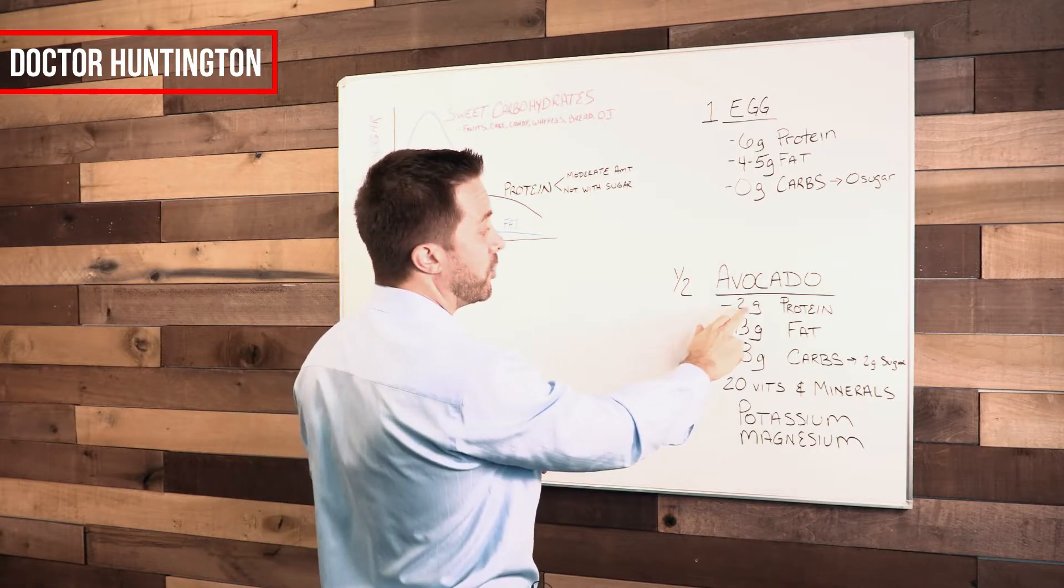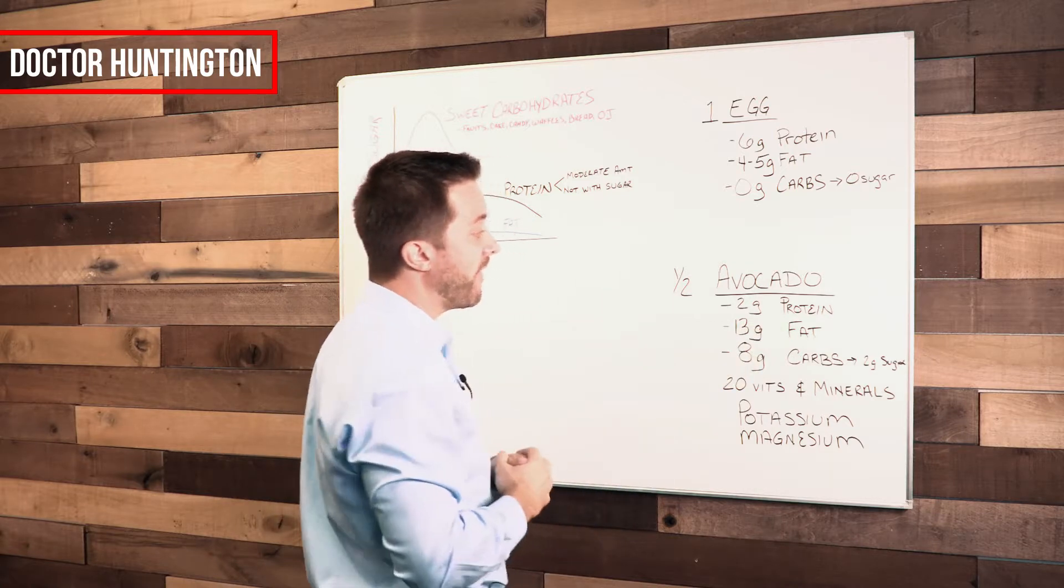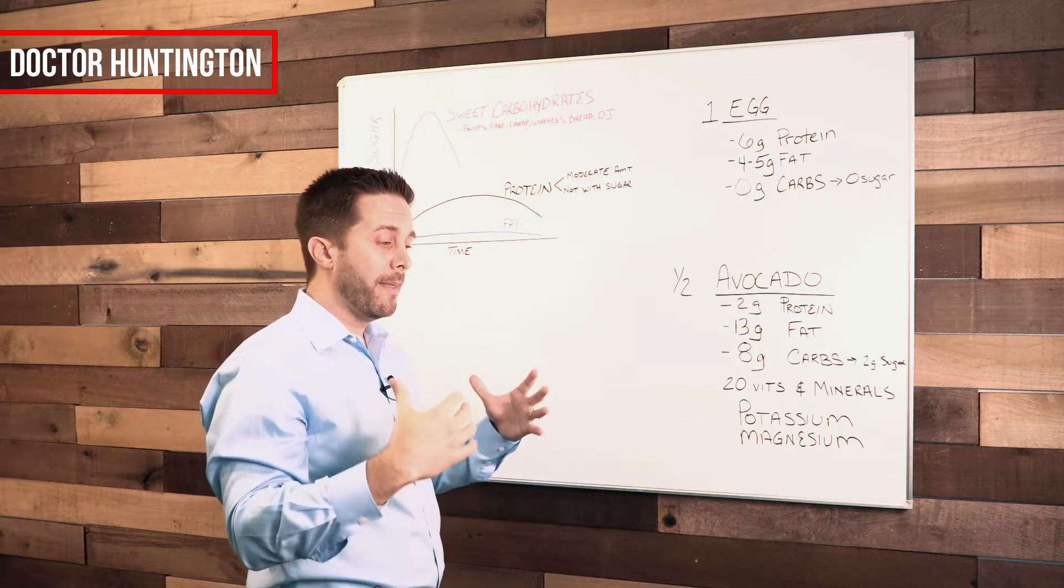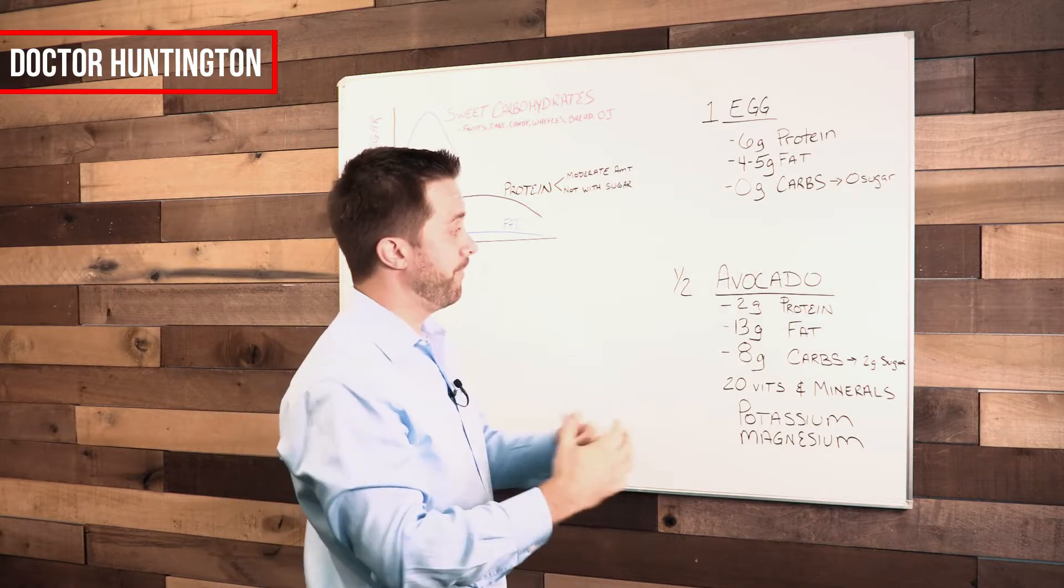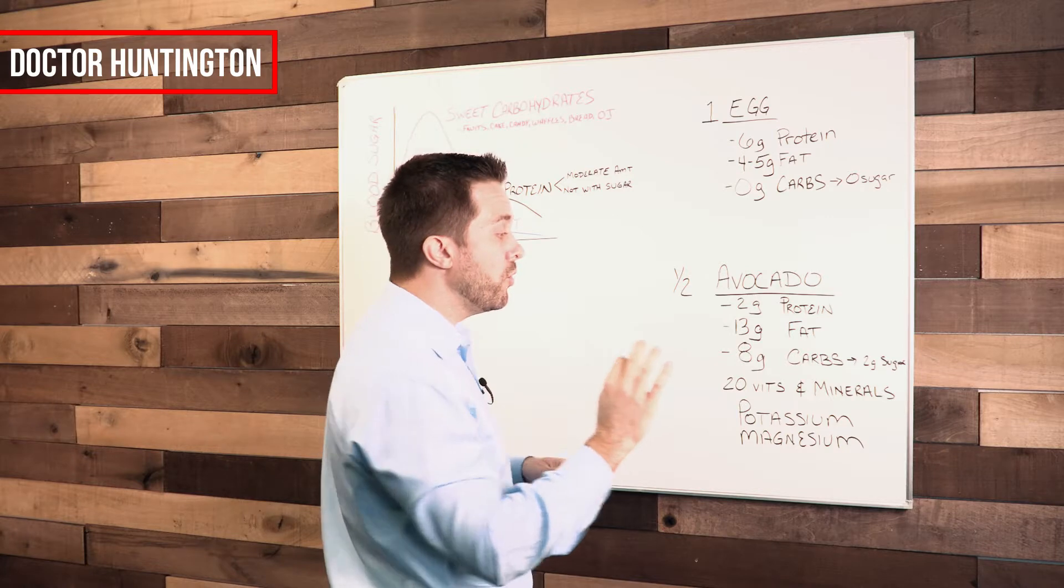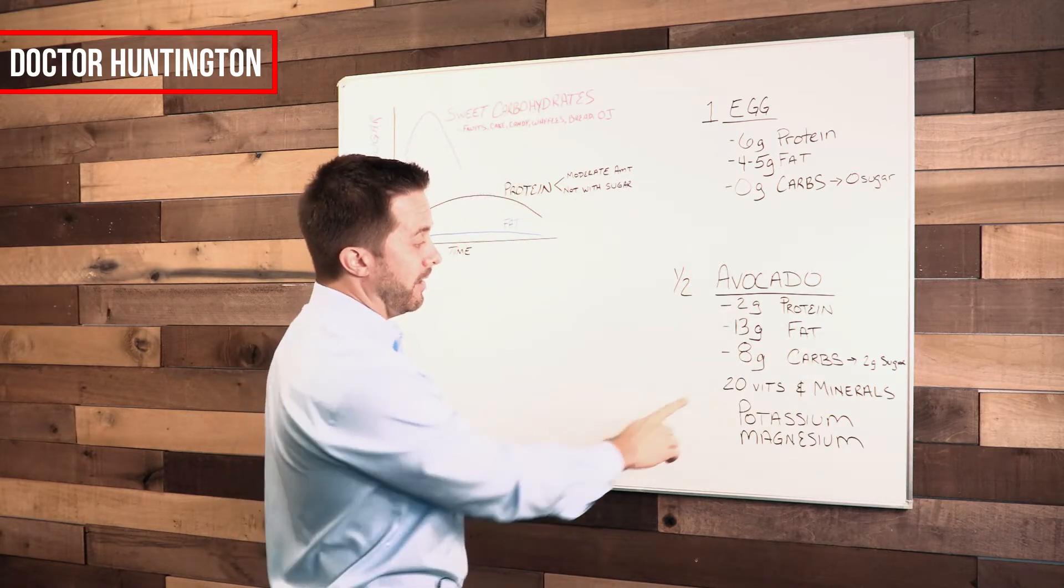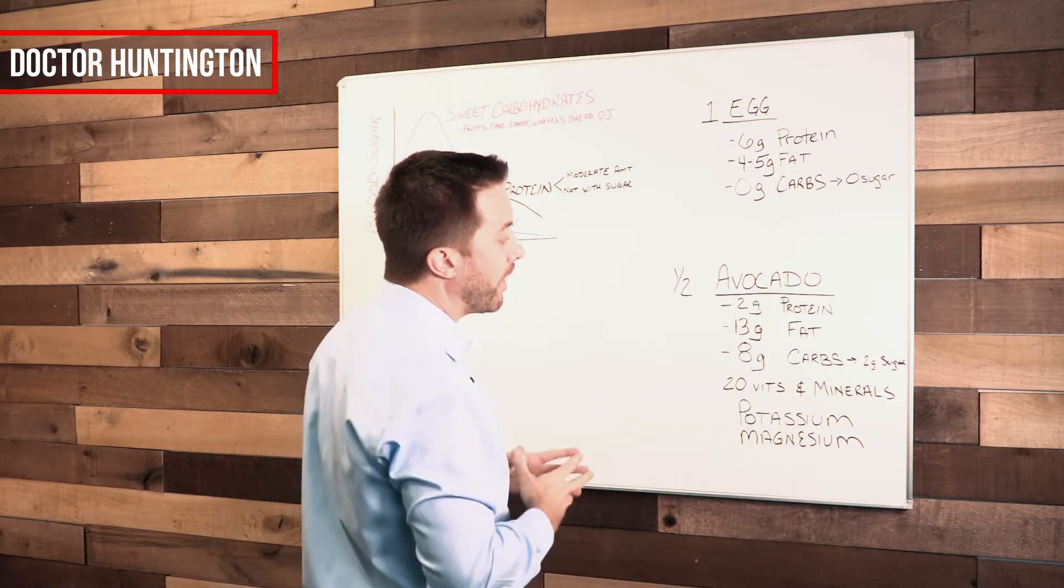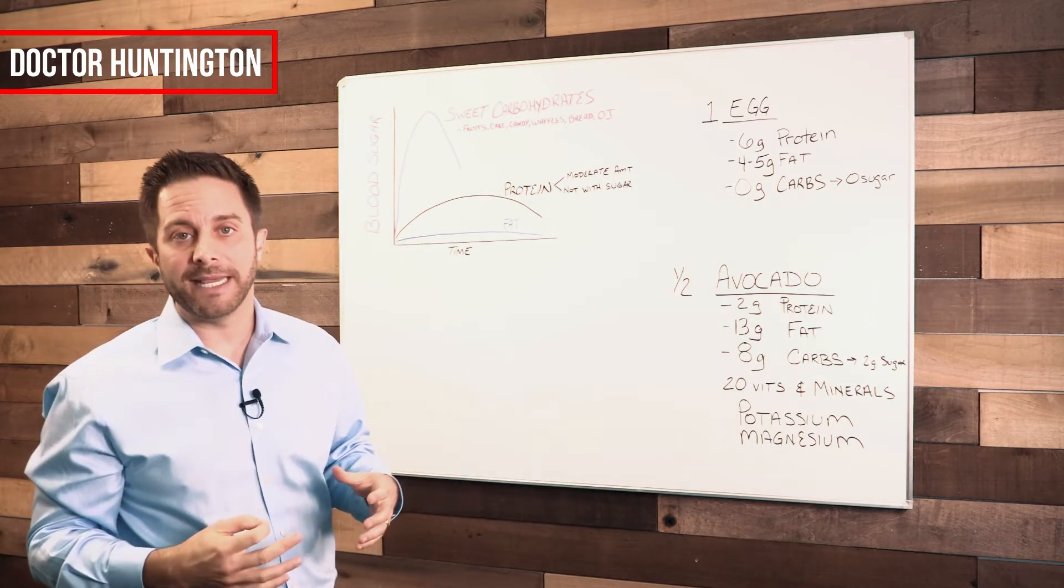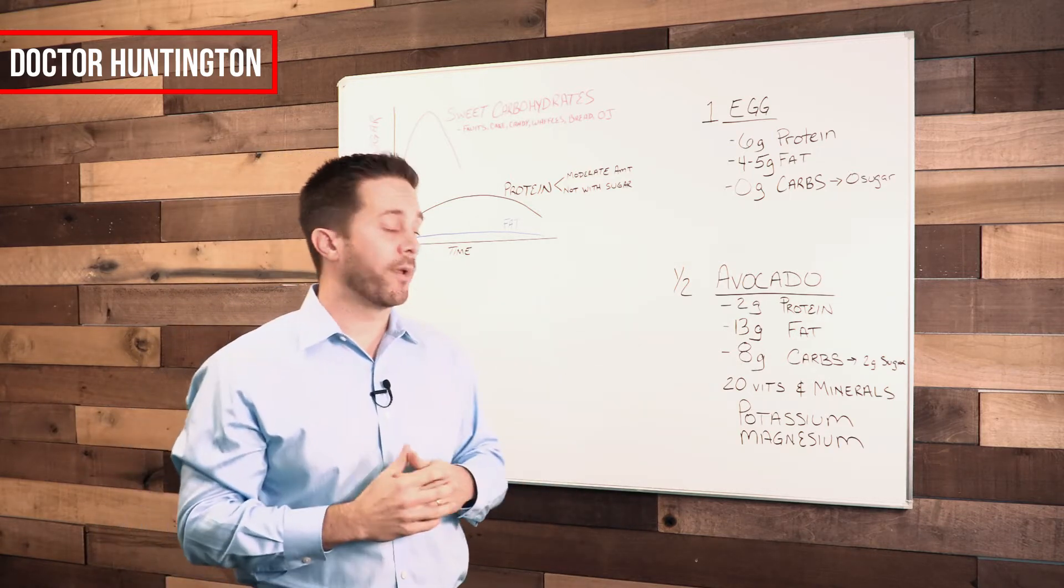Now let's look at our avocado. Half an avocado is going to have two grams of protein - that'll work. Thirteen grams of fat - that'll work too. In fact, that's part of what's going to keep you satiated until your next meal. Eight grams of carbohydrates, but only two of those eight grams are going to be sugar. The avocado also has 20 vitamins and minerals, which includes potassium and magnesium. Those two minerals are extremely important, and avocados are loaded with them.